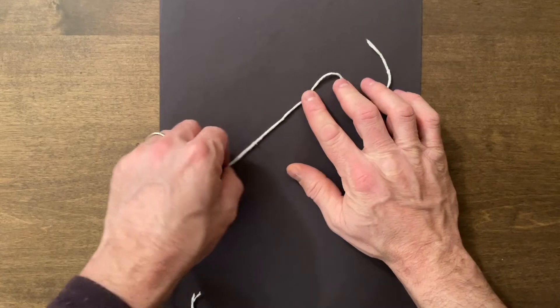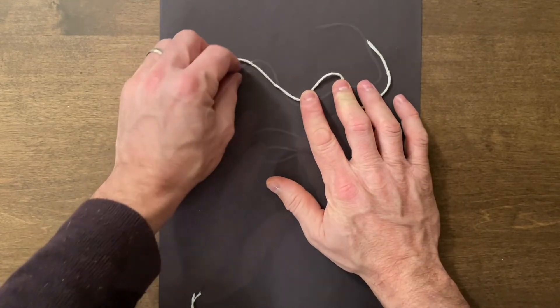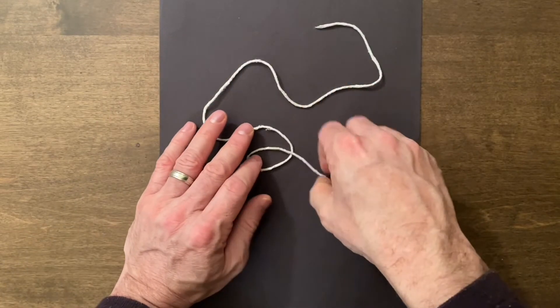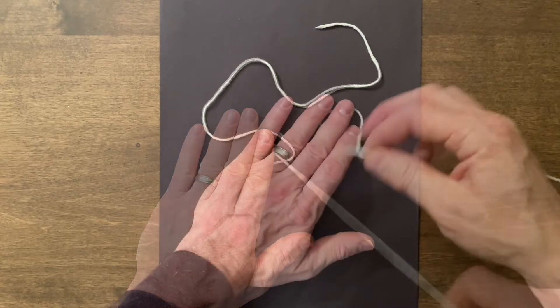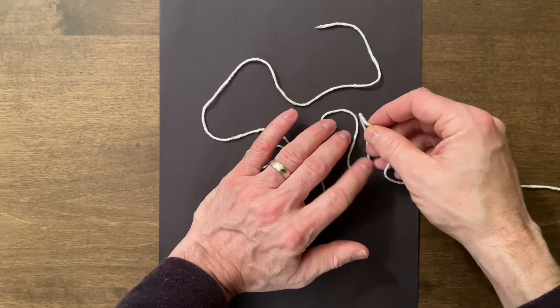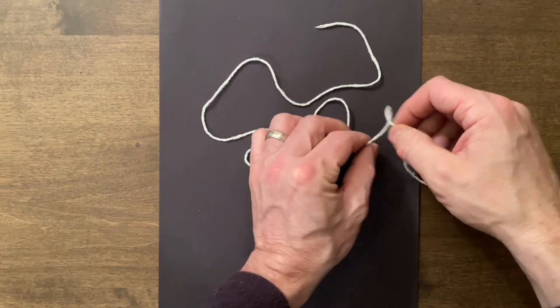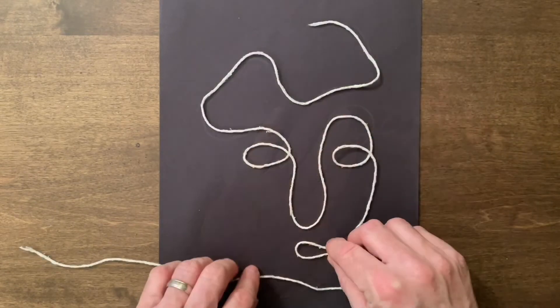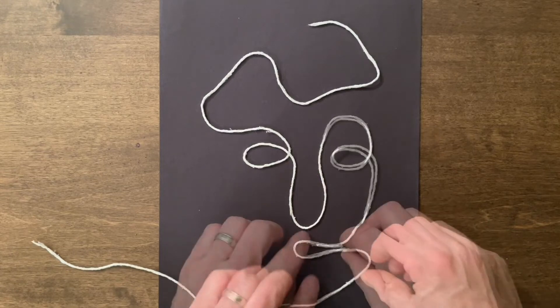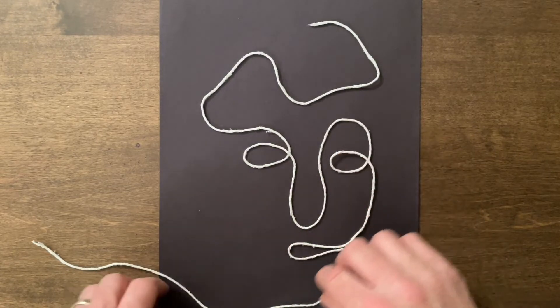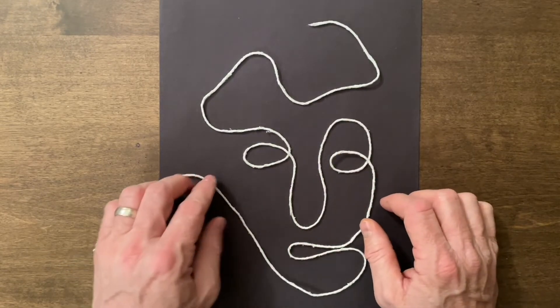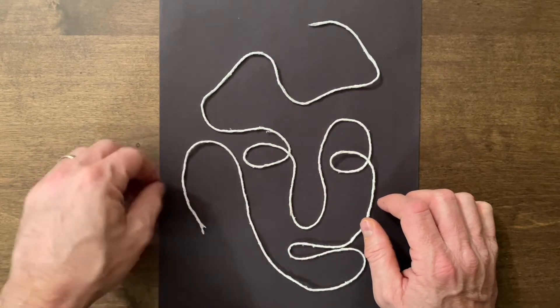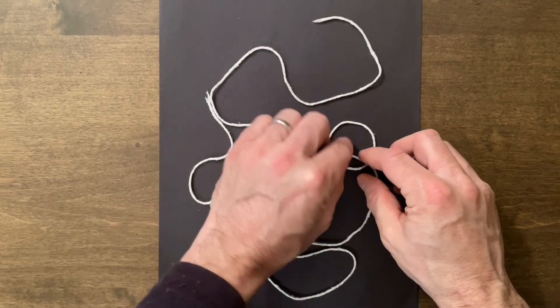Then I thought, well if I drew a flower maybe I could draw a face. So I did the same thing. I pictured the string as a line and by curling and curving the string around I was able to make the eyes, the nose, the mouth, but I had to make them all from one continuous line of string. It was challenging, but in the end I ended up with a really interesting drawing.